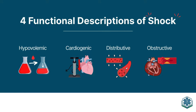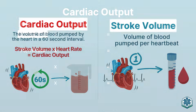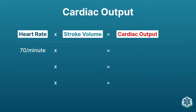Cardiac output equals heart rate times stroke volume. If the heart is beating at 70 times a minute and pumping out about 70 mL of blood — a normal stroke volume for an average adult — cardiac output is about 4,900 milliliters per minute, or about five liters.